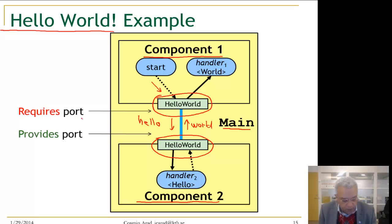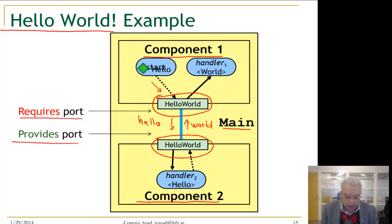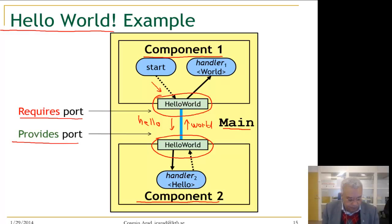So component 2 provides the Hello World port and component 1 requires the Hello World port. We have a start event that will trigger a hello event, and a hello event will trigger a world event. That is what we want to do.